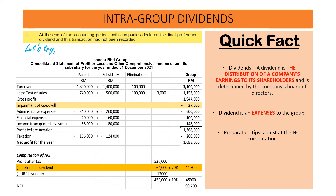This figure of 44,800 we have to add back to the 45,900 for the NCI for the ordinary share. The total NCI will be 90,700.